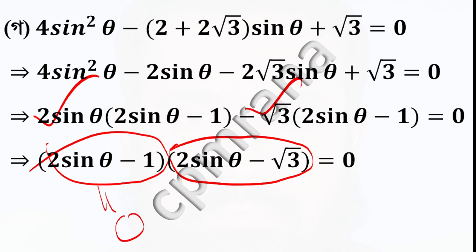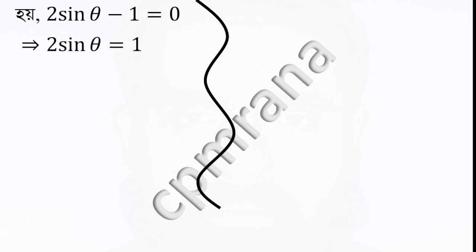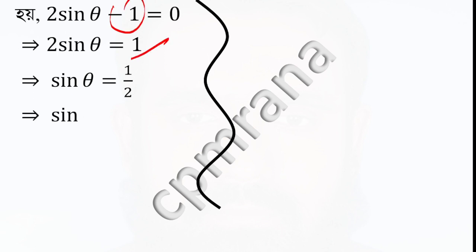So 2 sin theta minus 1 is equal to 0. And 2 sin theta minus root 3 is equal to 0. From the first factor: 2 sin theta minus 1 equals 0, so 2 sin theta equals 1, meaning sin theta equals half.